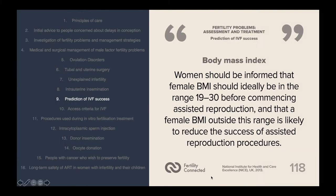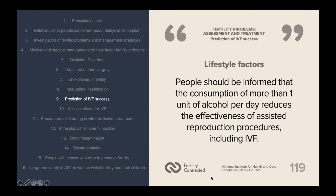Body mass index is very important: female BMI should ideally be in the range of 19 to 30 before commencing assisted reproduction, and a female BMI outside this range is likely to reduce the success of assisted reproduction techniques. Other lifestyle factors include alcohol, smoking and caffeine intake. People should be informed that consumption of more than one unit of alcohol per day reduces the effectiveness of assisted reproduction procedures including IVF.